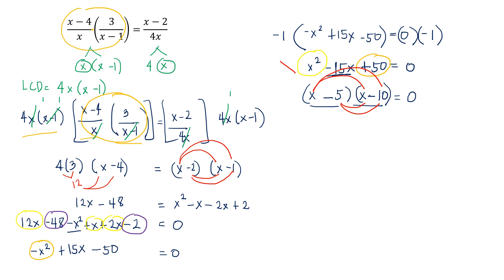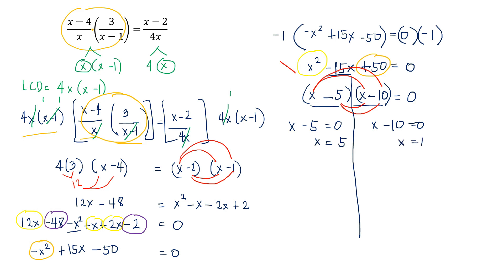By the zero product property, we equate both factors to zero and solve for x. By APE, we get x equals 5 and x equals 10.